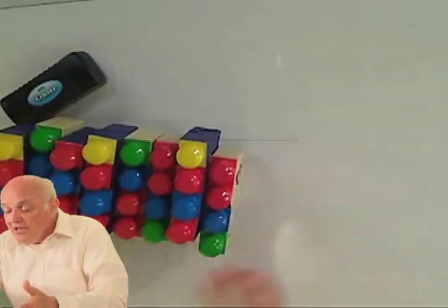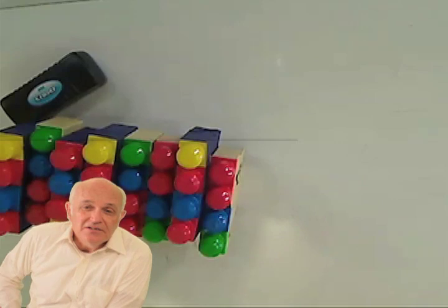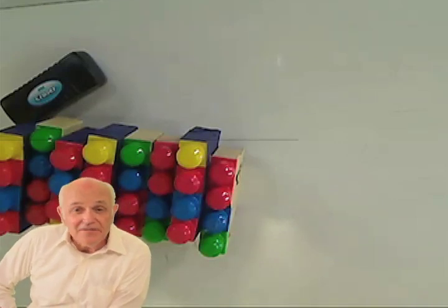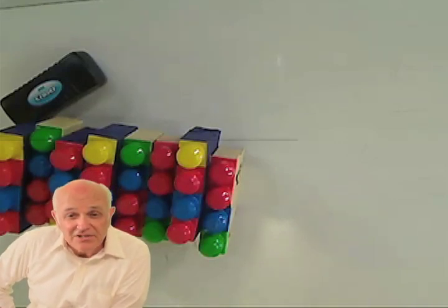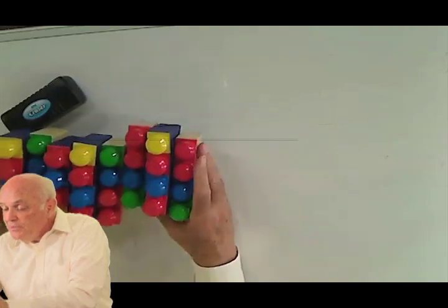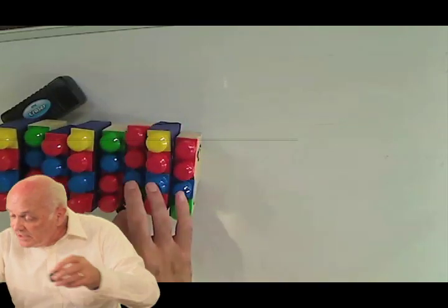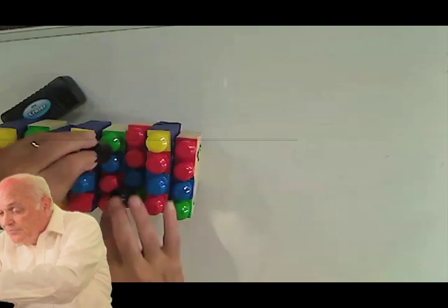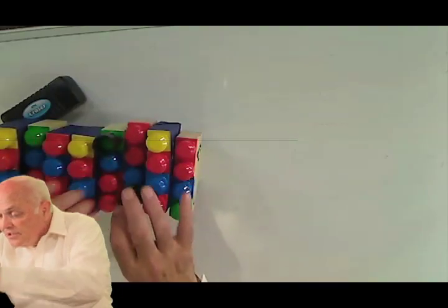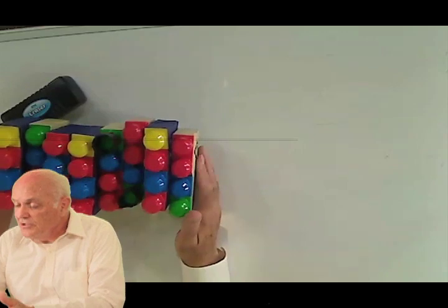When the guanine-cytosine dinucleotide is together, it's the site for DNA methylation. We can see that the methyl groups are going to go on these green units, so we put little labels on them. The methylation is on the two outside units.